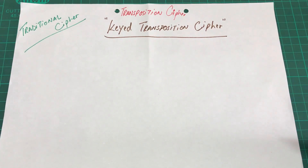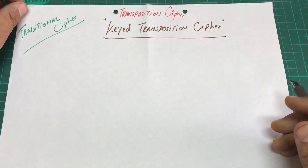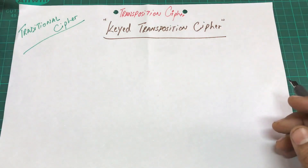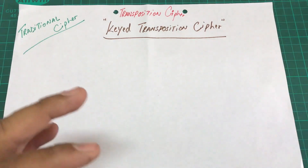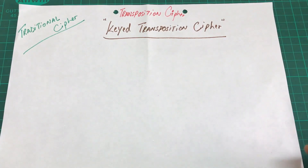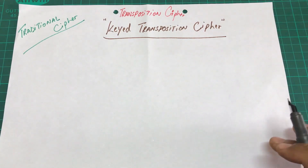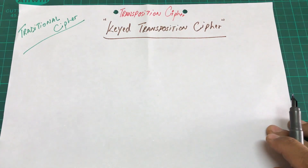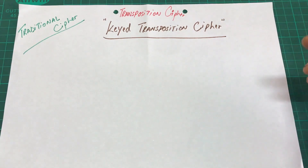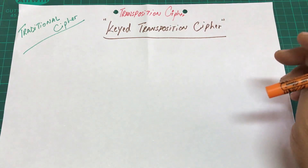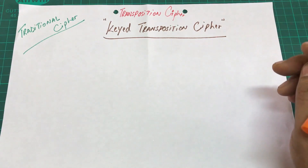Transposition ciphers are basically reordering the symbols — we are reordering the way alphabets appear without substituting them with anything else. Within transposition ciphers, we have two categories: keyed transposition cipher, where we have some type of a key, and keyless transposition cipher. We're going to look at those separately.